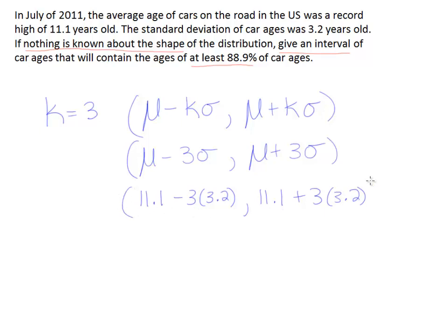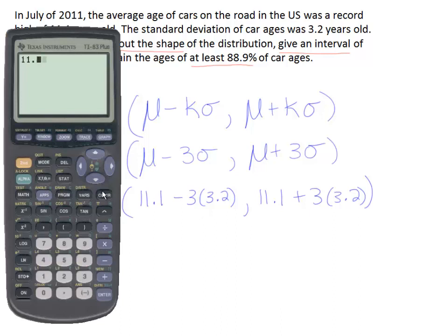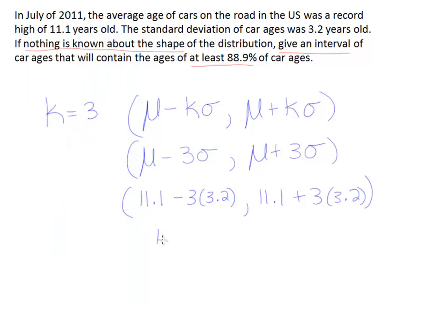We simply evaluate that either with paper and pencil or with a calculator. So it'll be 11.1 minus 3 times 3.2, and when we do that, we get 1.5. If we do the same calculation, 11.1 plus 3 times 3.2, now we're adding instead of subtracting, we end up with 20.7. So the final interval is from 1.5 to 20.7 years. That ends up telling us the interval that will contain at least 88.9% of the cars.